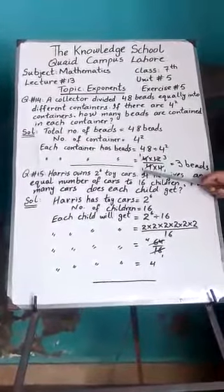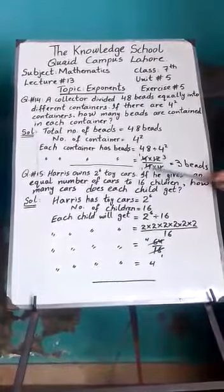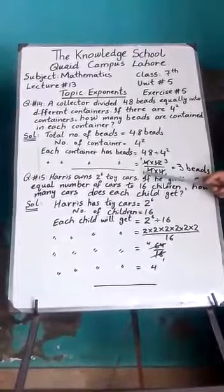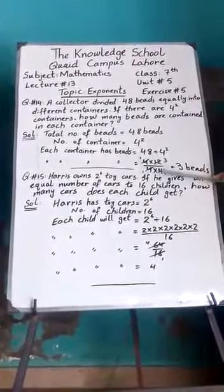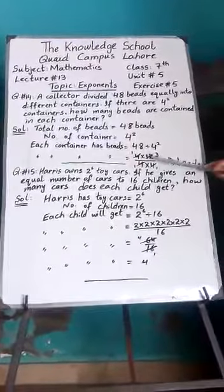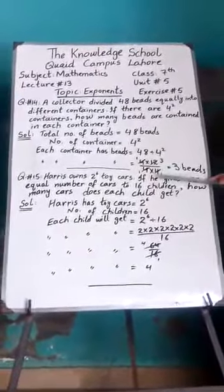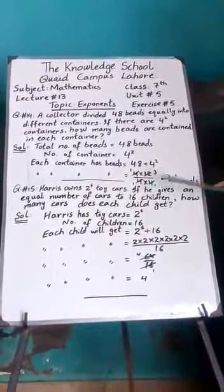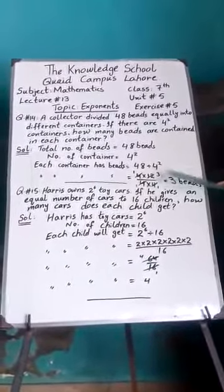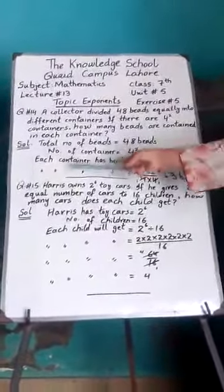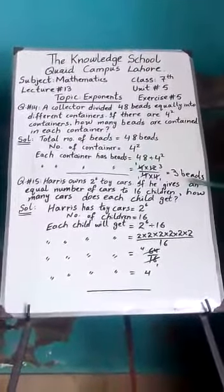So students, we will multiply 4 two times. Now we will cancel 4 with 4 and we will cancel this 4 and 12. 12 divided by 4 is 3, 4 ones are 4, 4 threes are 12. So we will get 3 as the answer. So each container has 3 beads.